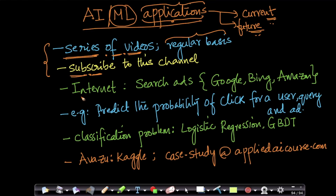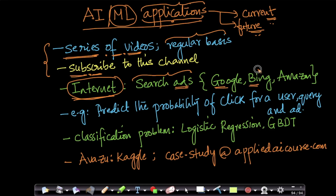On the internet we see a lot of ads, and we'll specifically focus on one type called search ads, which is literally the bread and butter of companies like Google and Bing. Bing is a search engine by Microsoft, for those who may not be familiar with it. Search ads generate billions of dollars of revenue for companies like Google and Bing.